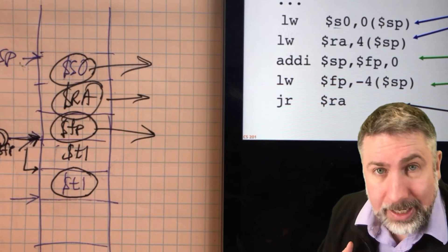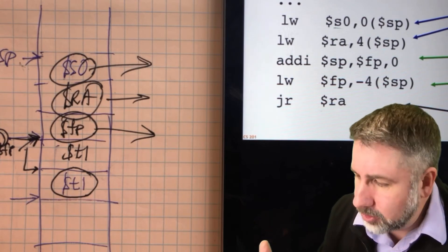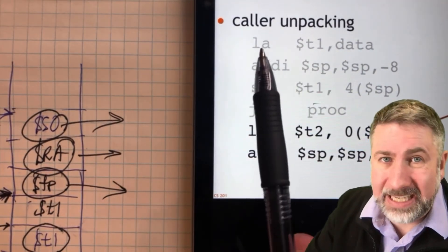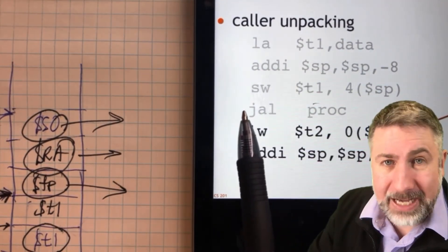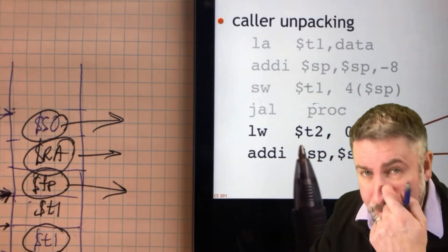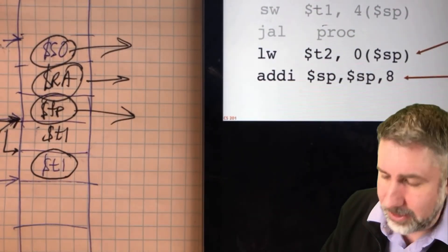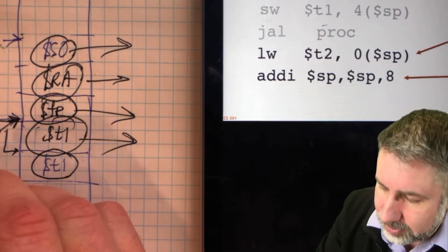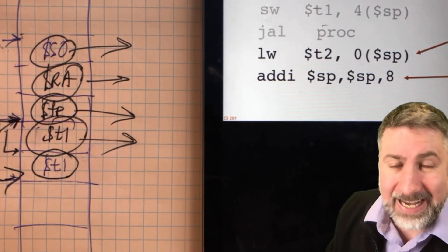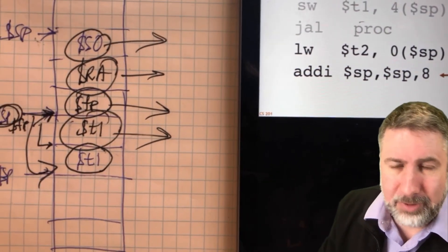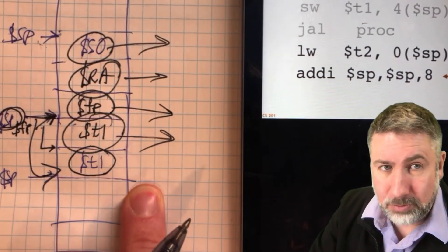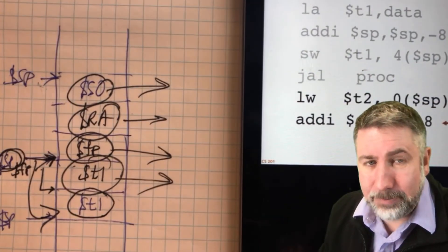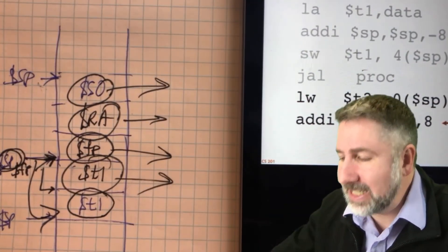Now we can JR RA which gets us back to the original calling code. Back from the procedure, we're going to retrieve the return value which the procedure put onto the stack, and then put the stack pointer back by adding eight. Remember the stack frame grows towards smaller addresses, so to remove stuff from the stack we add to the stack pointer.